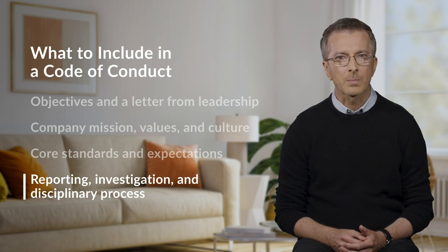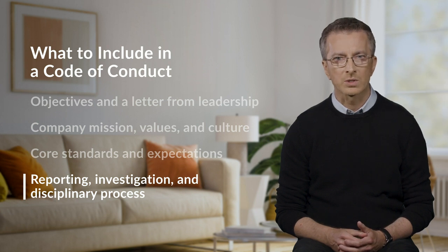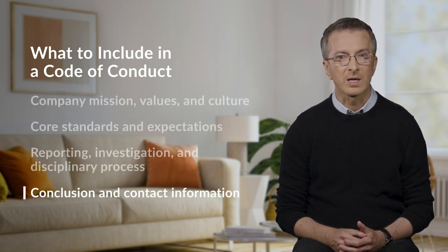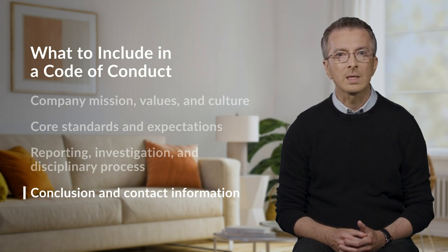Encourage employees to speak up when they witness or suspect unethical behavior. Finally, the last section of your code of conduct is the conclusion and additional contact information. Summarize a few key takeaways and make it easy for employees to find who to contact for reporting violations or asking questions. Use this outline as a general framework — it will be easier to fill in the details if you involve others in the discussion. Ask leaders and employees from different departments what they think is important. Not only will involving others help obtain their buy-in, but it will also ensure that you don't overlook anything important.